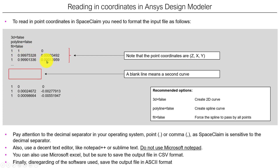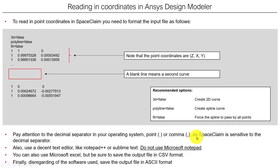See that I'm plotting this curve in the set plane — fixed at one, or it can be zero, whatever you want. A blank line here means a second curve. The same applies: please use Notepad++ or Sublime Text. Do not use Microsoft Notepad, be aware of the decimal separator in your operating system, and always save those files as ASCII.